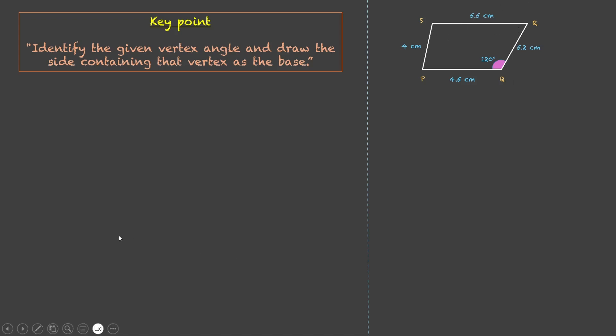Let's say we pick SR of 5.5 and from S, we can make an arc of 4 cm. From R, we can make an arc of 5.2. But what next? We'll be stuck there. So over here, it becomes crucial for us to pick a side where the angle is given to us. So in this case, we are picking PQ.